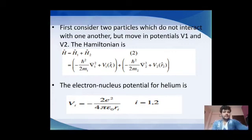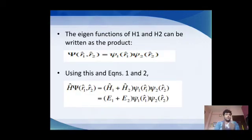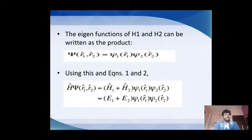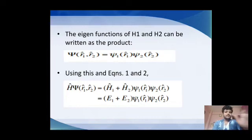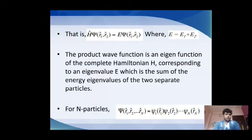Now we consider what the wave function is. The total wave function is the product of individual wave functions: ψ(r₁, r₂) = ψ₁(r₁) × ψ₂(r₂). We then substitute this into the main equation — the Hamiltonian operator times the wave function equals the eigenvalue times the wave function — to solve for the eigenvalue.